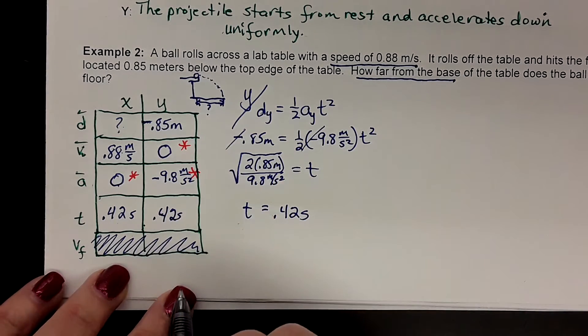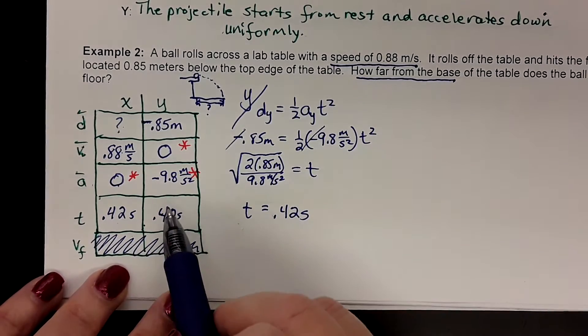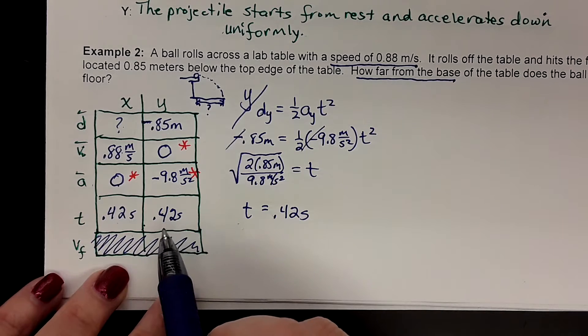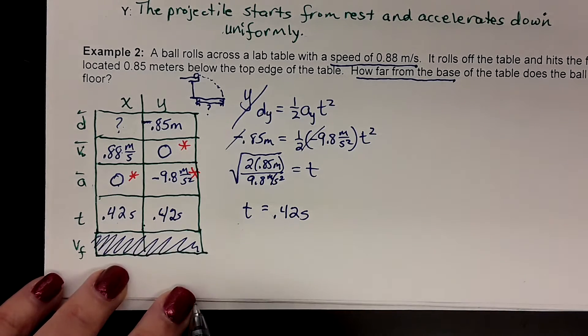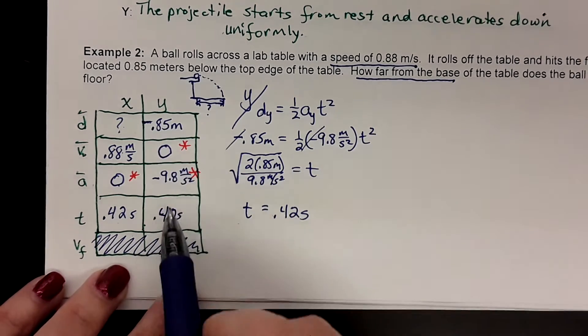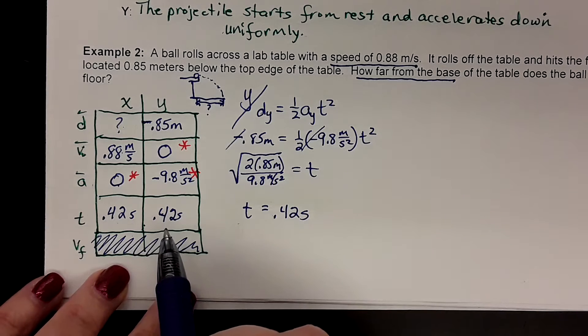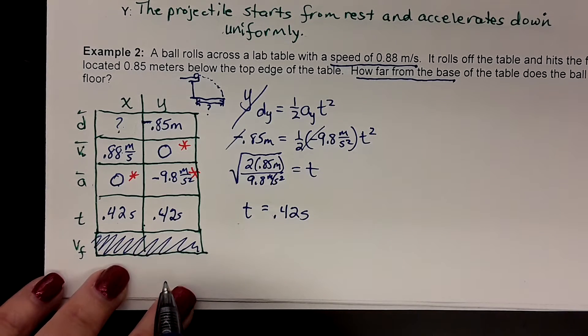Once the object hits the ground, that's when the horizontal motion stops too. So the time it takes it to come down is the only time it has to travel outward.